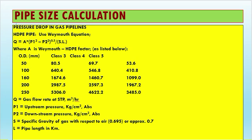For pipe size calculation based on pressure drop in a gas pipeline, the Weymouth equation is used: Q = A × [(P1² − P2²) / SL]^0.5, where A is the Weymouth HDPE factor (50 for Class 3, 80.5 otherwise), Q is gas flow rate in m³/h, P1 is upstream pressure in kg/cm², P2 is downstream pressure in kg/cm², S is specific gravity of gas relative to air (approximately 0.695 or 0.7), and L is pipe length in kilometers.